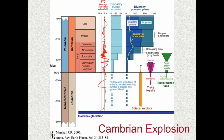Here is the Cambrian Explosion, this evolutionary radiation. I want you to pay particular attention to this — this is biodiversity, the number of genera of complex multicellular eukaryotic life. Notice this dark black line — here's the boundary. Precambrian on this side, Phanerozoic on this side. You'll notice that when we start the Phanerozoic, we have maybe 20 to 30 genera of complex life. But within about a 20-million-year period, we go from about 20 to over 1,200. This is the definition of that evolutionary radiation, and this is why we draw the boundary where we do.